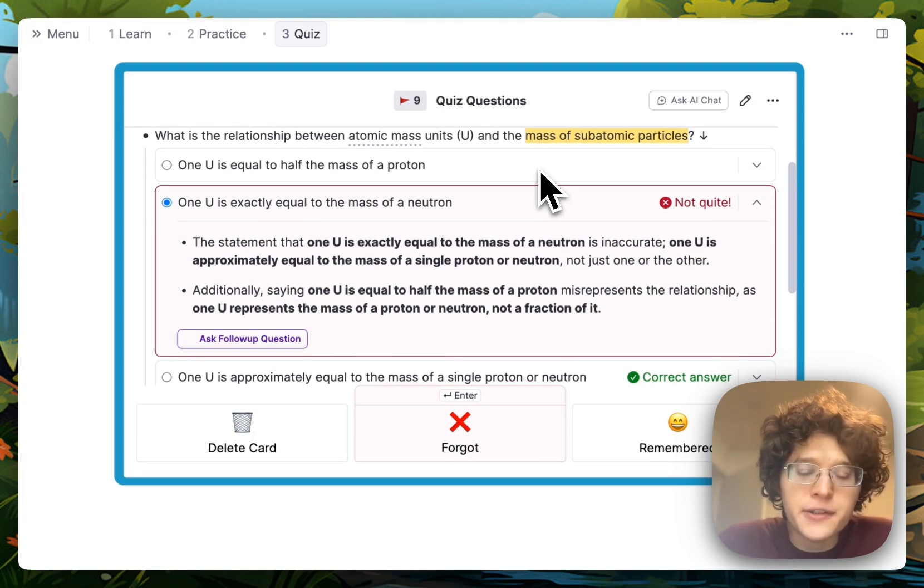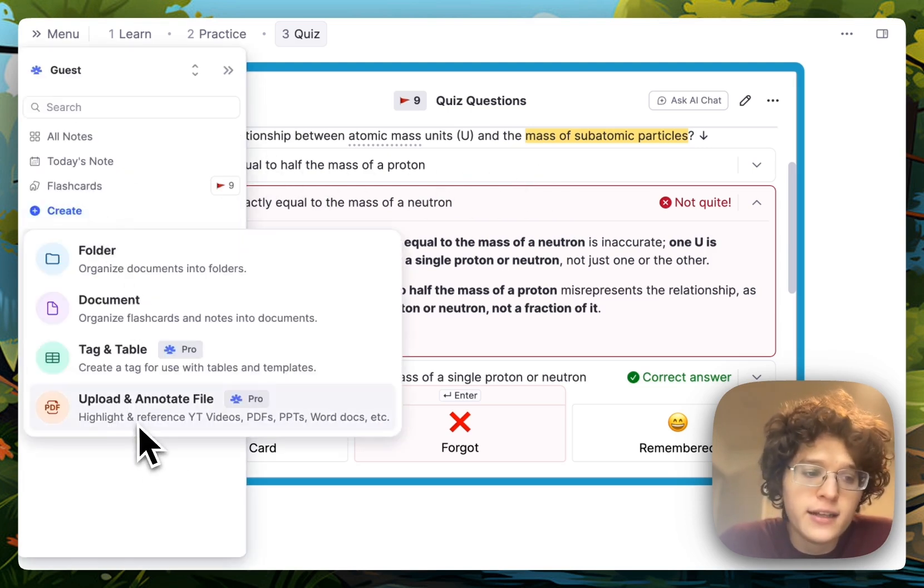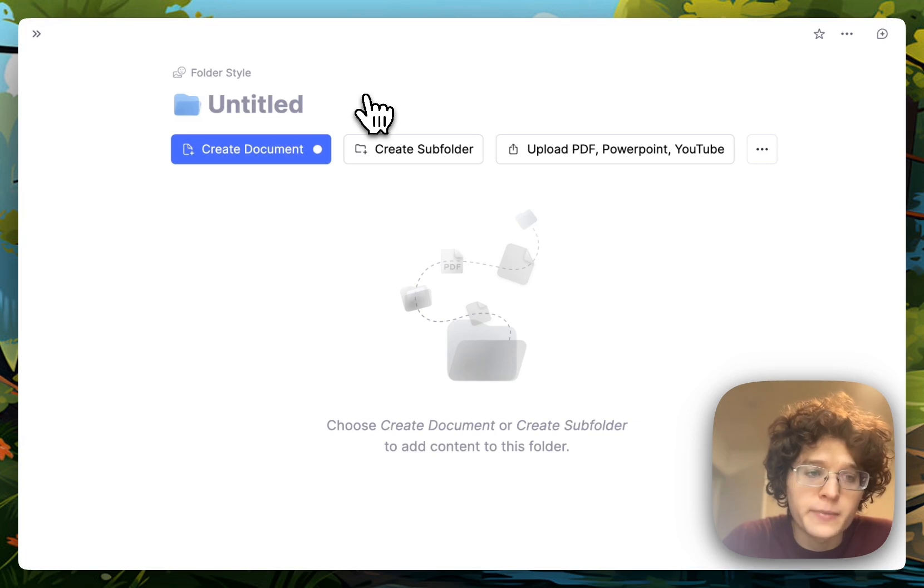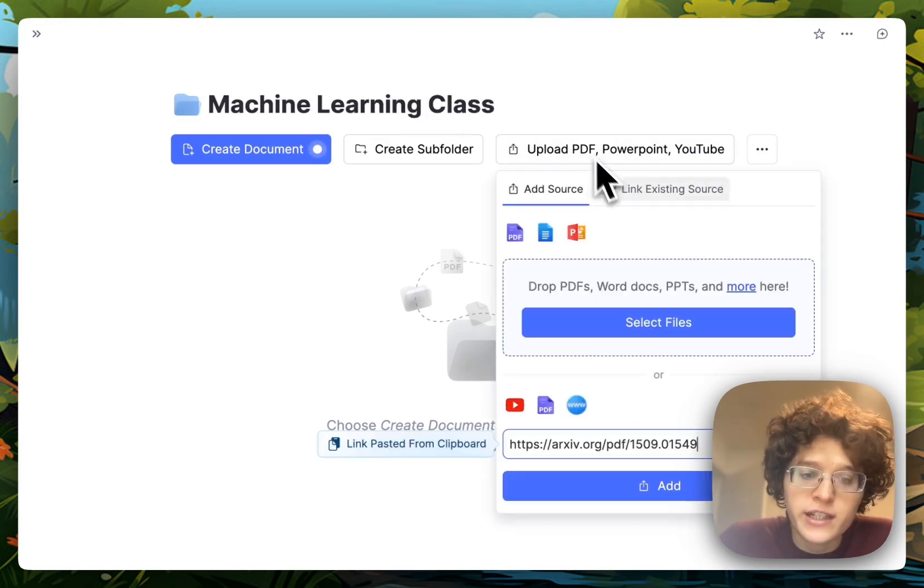All of these learning features don't only work for YouTube videos. They also work for PDFs, PowerPoints, web pages, and really any kind of source. From your sidebar, you can again upload your source, or you can go into an individual folder. For example, we can make one for my machine learning class, and then upload your source directly to there.